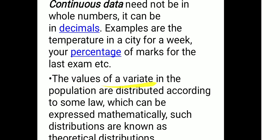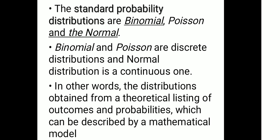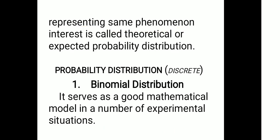The values of a variate in the population are distributed according to some law which can be expressed mathematically. Such distributions are known as theoretical distributions. The standard probability distributions are binomial, Poisson, and the normal distribution. Binomial and Poisson are discrete distributions and the normal distribution is a continuous one. The distribution obtained from a theoretical listing of outcomes and probabilities described by a mathematical model is called the theoretical or expected probability distribution.